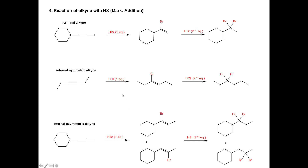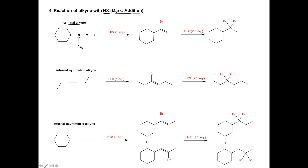Now we're going to be reacting an alkyne with HX. What we need to remember about this reaction from alkenes is that it will have Markovnikov addition, meaning we will add our halogen to the Markovnikov carbon. This is really only relevant when we have a terminal alkyne. Looking at our terminal alkyne example, the carbon on the left is connected to the cyclohexane ring and the alkyne, while the carbon on the right is connected to our H.